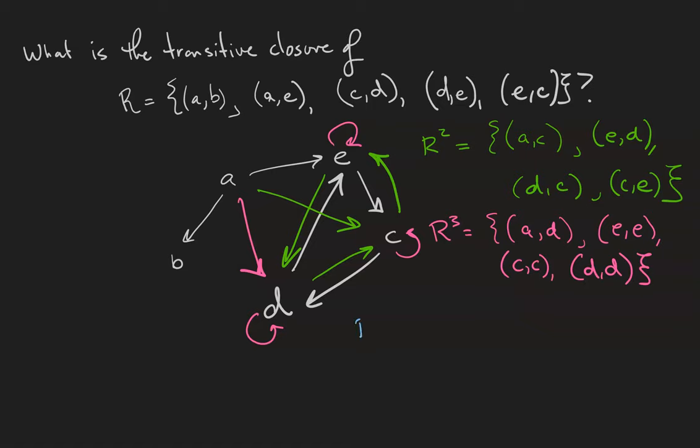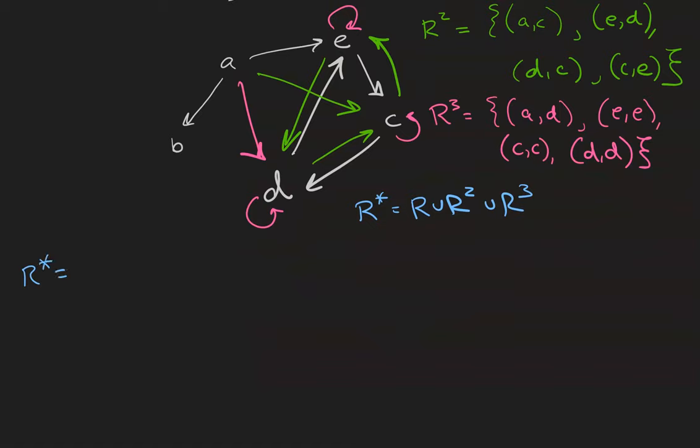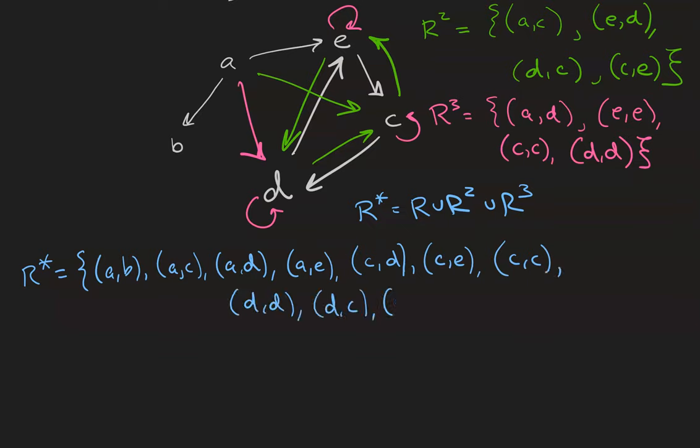R star is the set of all of these pairs. R star is the relation A to B, A to C, D and E, B to nothing, C to D, E and itself. Same goes for D and E. This relation is the transitive closure of R.